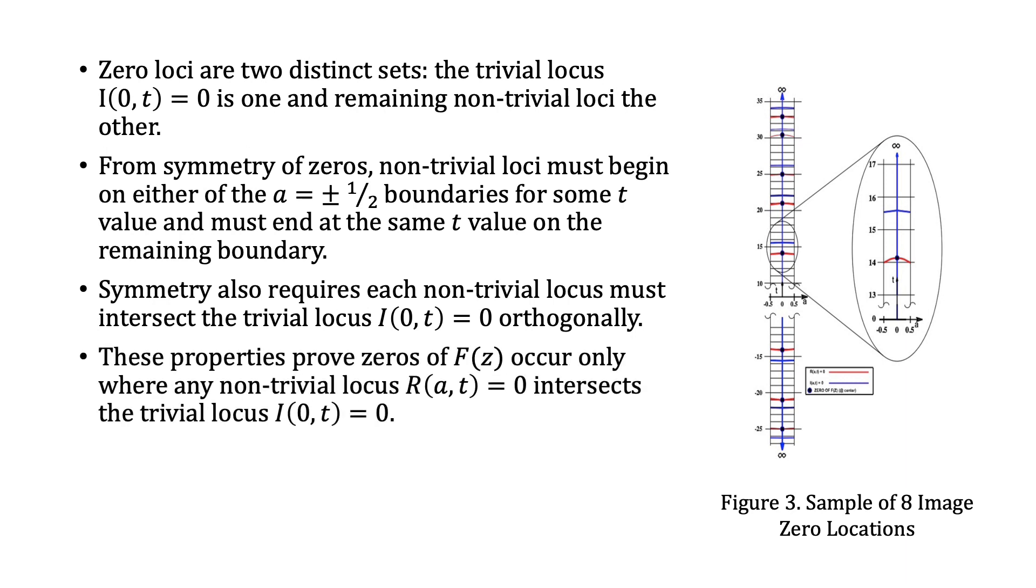These properties prove zeros of F(z) occur only where any non-trivial locus R(a,t) = 0 intersects the trivial locus I(0,t) = 0.